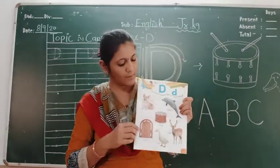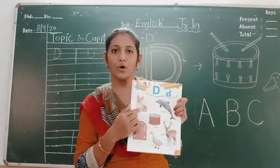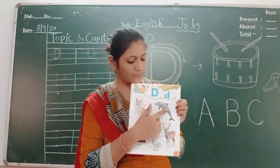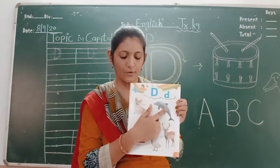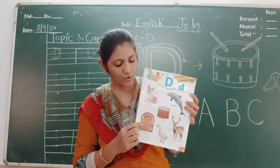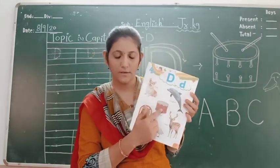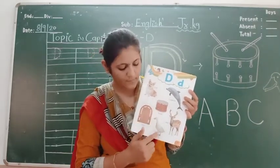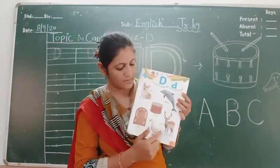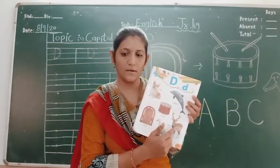One more time, let's repeat: D for dog, D for dolphin, D for door, D for drum, D for dolphin, and D for deer.